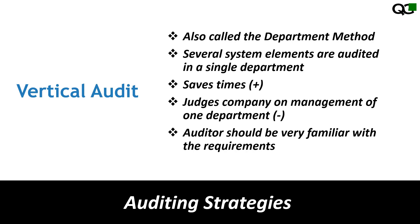The vertical audit is also called the department audit or department method. You audit several elements within a single department, which saves time because you don't need to move around to different departments. Since you're covering all quality system elements in one department, the auditor must have good knowledge of all the requirements related to that particular department.